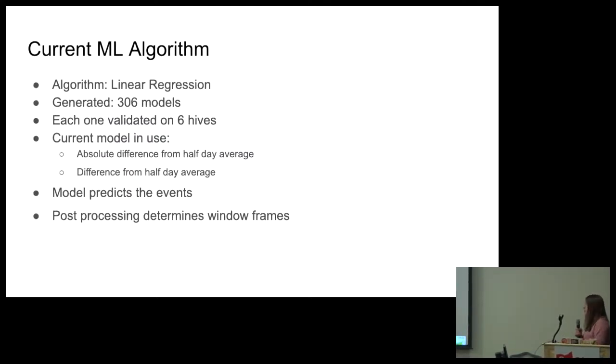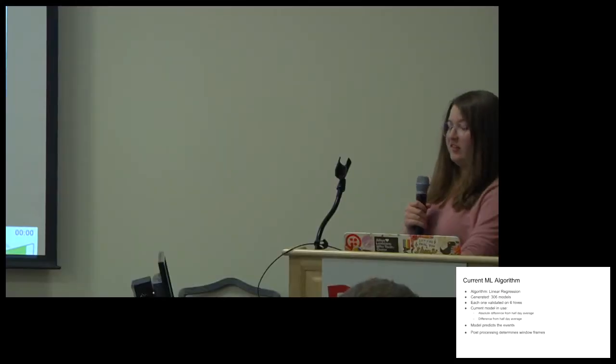So our current machine learning algorithm. We use linear regression. We definitely probably could have used something like quadratic regression or a neural net. Though with the looming date of graduation and running out of funding, we couldn't test in time before I graduated. So we have actually more undergrad students working on this project now. And I'm excited to see the results they come with. We had 306 models. We definitely could have had more. Each one of those 306 models was validated on six hives, which you saw. Those six hives were our test graphs that you just saw. Our current model in use is using absolute difference from half day average and difference from half day average data set values, which are based off of the normalization graph you saw first. Our model does predict the events that farmers did annotate. And it does predict frames of time in which an event could have occurred, as well as interesting events that didn't actually get annotated.